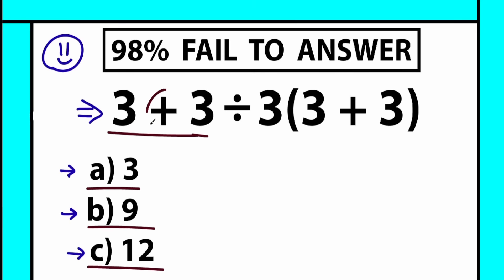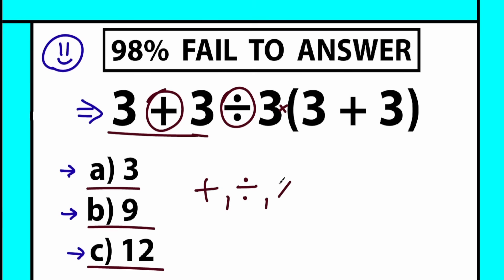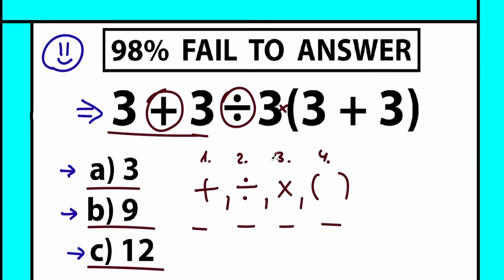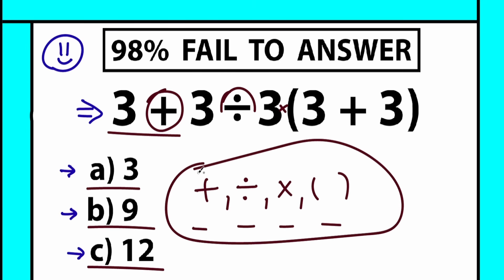We have addition, we have division, we have multiplication — though not in an obvious place — and we have parentheses. So we have four mathematical operations: addition, division, multiplication, and parentheses. In terms of math, it's really important to know how to order all of this. How can we find the correct order to perform these mathematical operators? We need to know what the correct order is for these four operations.